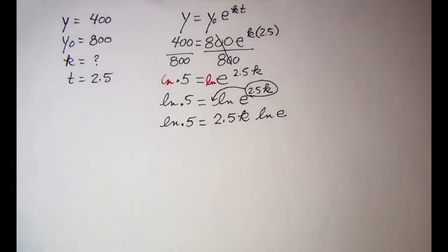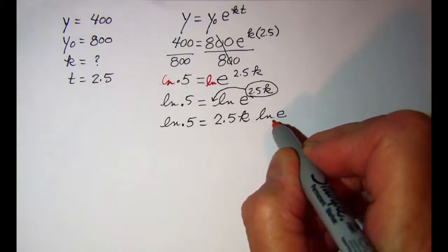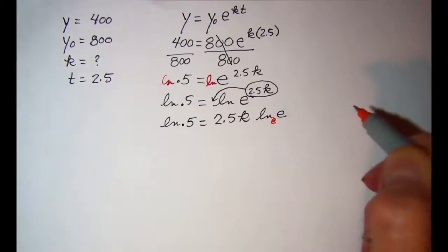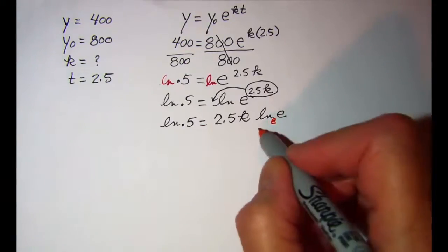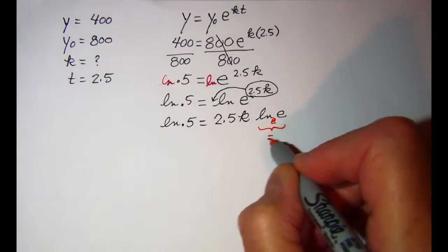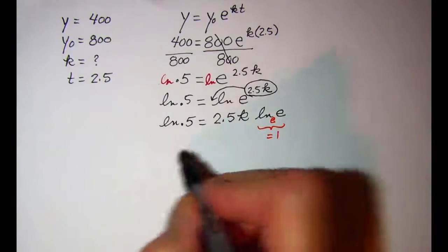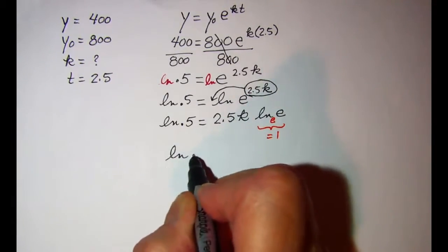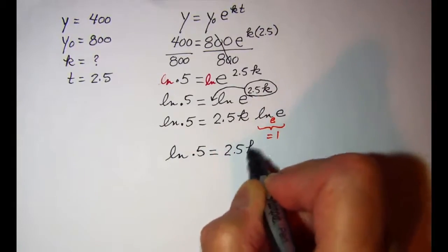Now we know that if the base of our logarithm and the argument of our logarithm are the same, and we know that the base of a natural logarithm is e, if these are the same then this is equal to 1. So now my equation becomes ln 0.5 equals 2.5 times k.